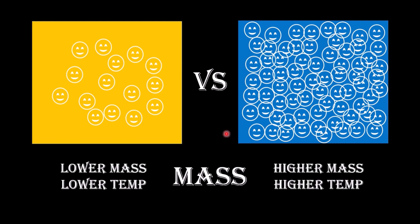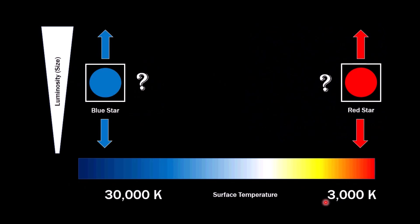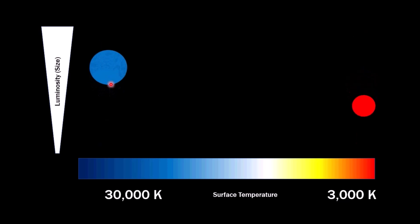So, now take that same idea of this lower mass, lower temperature, higher mass, higher temperature, and relate it to the stars. When the blue, so in order for the blue star to be hot, it must be big, and then vice versa for the red star. In order for the red star to be cold, it must be small. So, it goes to the bottom of the graph.